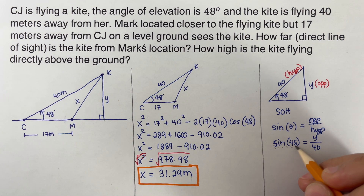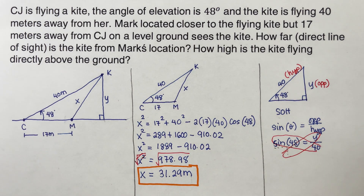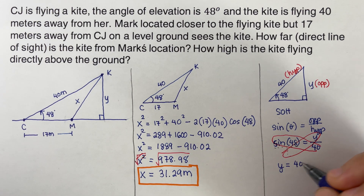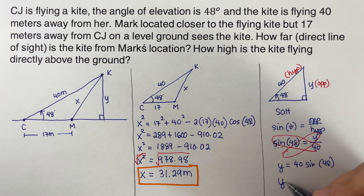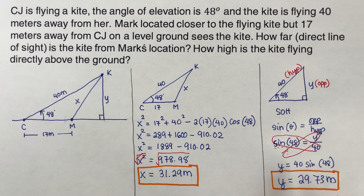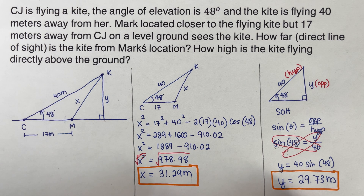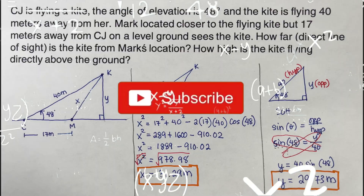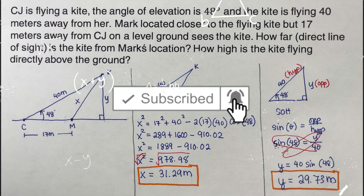This means the height of the kite from the ground is 29.73 meters. Did you get the same answers? Good — if you find this video helpful, hit like and subscribe for more math videos. See ya!